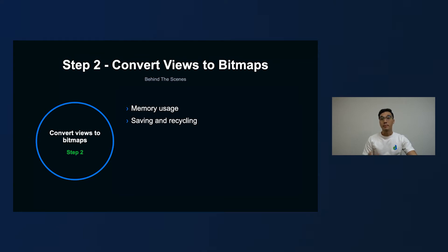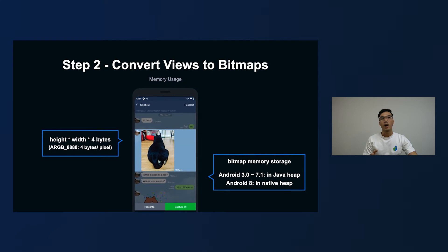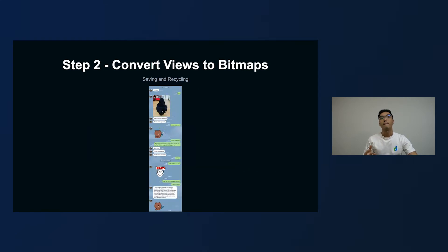Step two: you have to convert the prepared views to bitmaps. There are two things to consider here. The first one is memory usage, and the second is saving and recycling. For memory usage, we have to do a little memory usage prediction — we have to do the math. We get the height and width of each view and multiply them by four bytes. Why four bytes? Because we're using ARGB8 bitmaps, which means one pixel is stored as four bytes. We also have to factor in the bitmap memory storage, because that depends on the Android operating system the user has — we have a lot of different users across different countries, so we just want to make sure our feature doesn't go wrong.